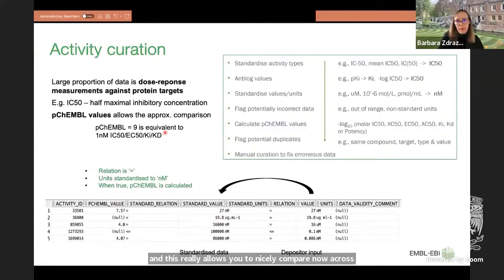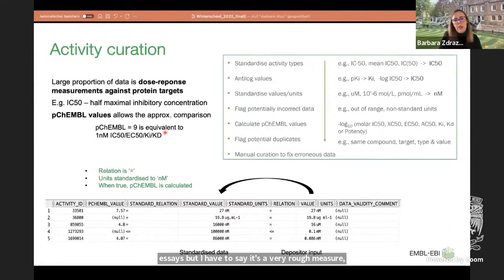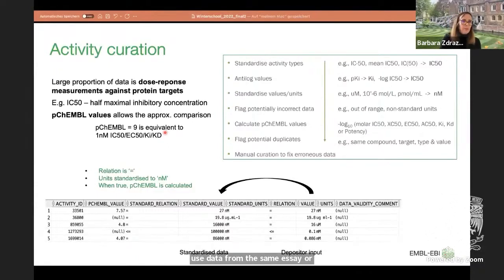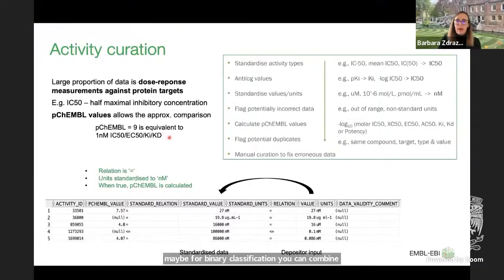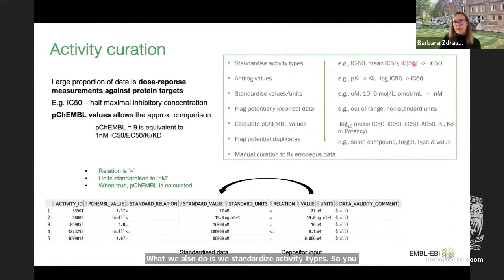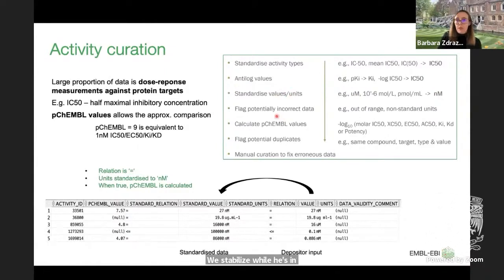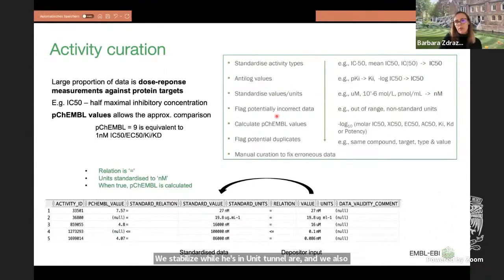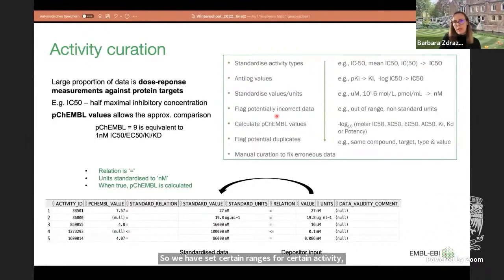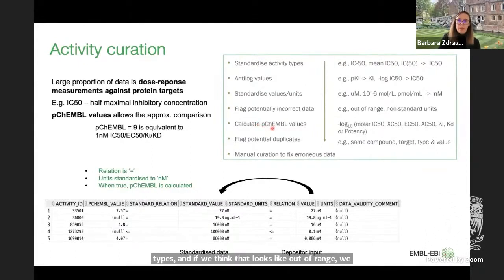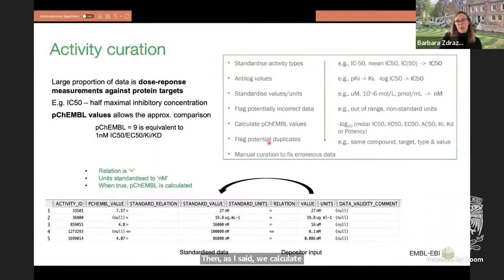The pChEMBL value is a rough measure — for regression analysis you should use data from the same assay or measured under the same assay conditions, though for binary classification you can combine different assays. We also standardize activity types, antilog reported values such as pKi back to Ki, standardize values and units to nanomolar, and flag potentially incorrect data by setting ranges for certain activity types. We also flag potential duplicate data points — where the same compound, target, and activity type appears in two different publications.